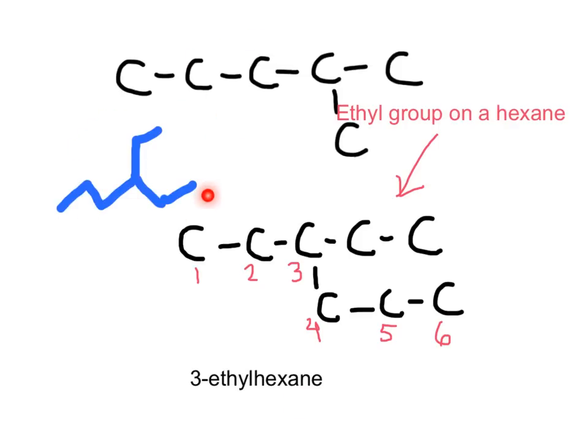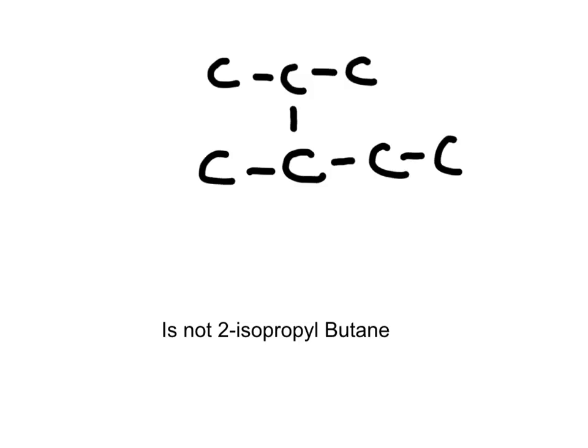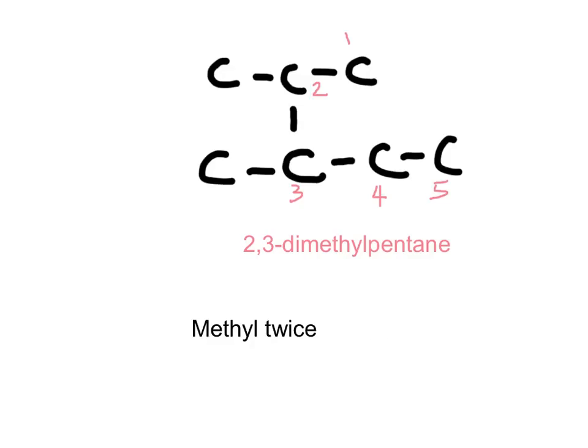We should not get the illusion that this is a butane with a substituent at position two — isopropyl. It is not 2-isopropylbutane. The longest hydrocarbon chain must include as many branches as possible. We number the hydrocarbon chain from the end closer to the branch. When alkyl groups or substituents repeat, we need to group them. In this case, we have a methyl group on carbon two and a methyl group on carbon three; therefore, the name is 2,3-dimethylpentane.